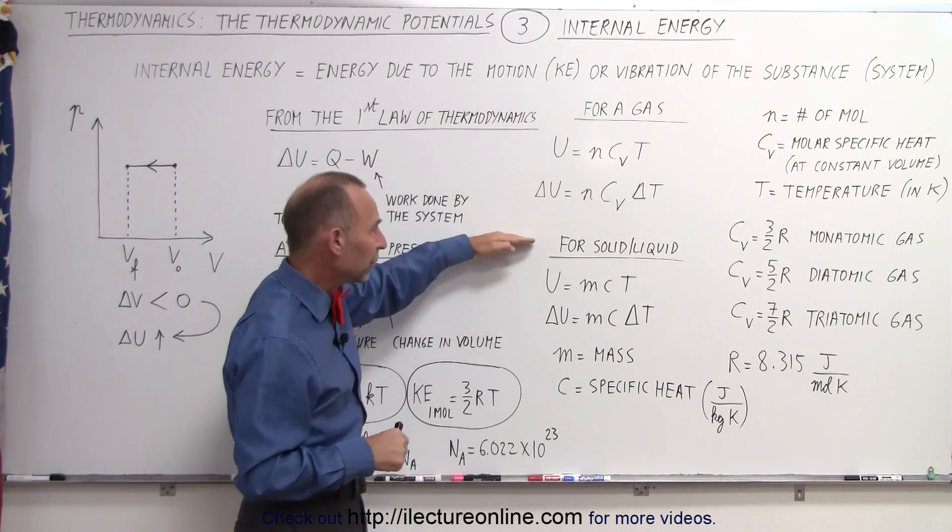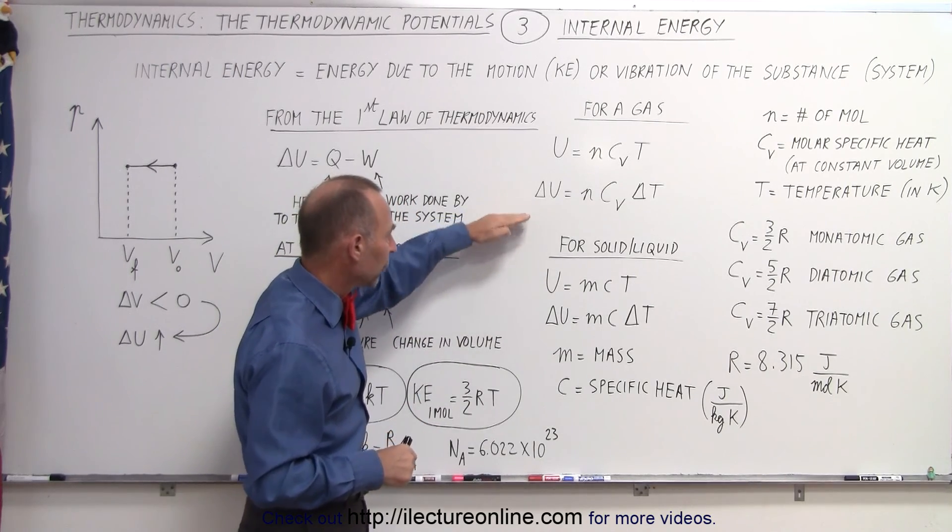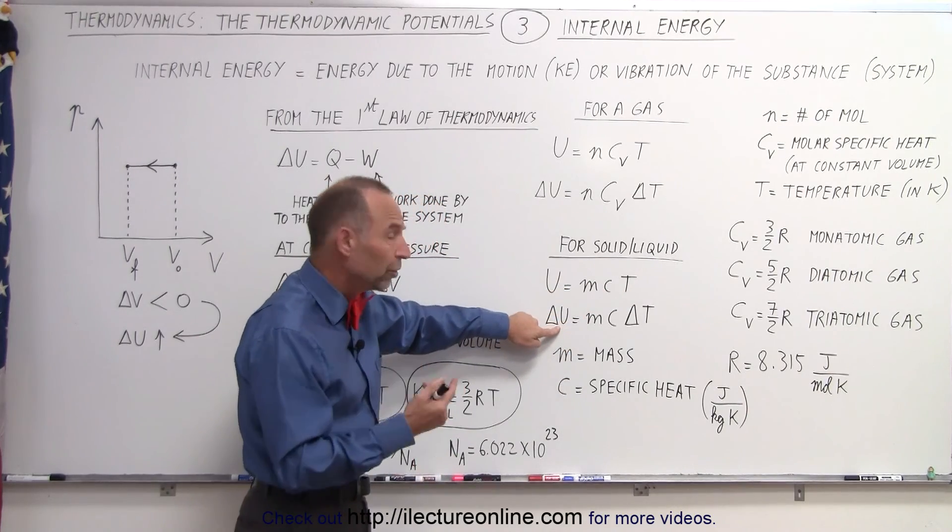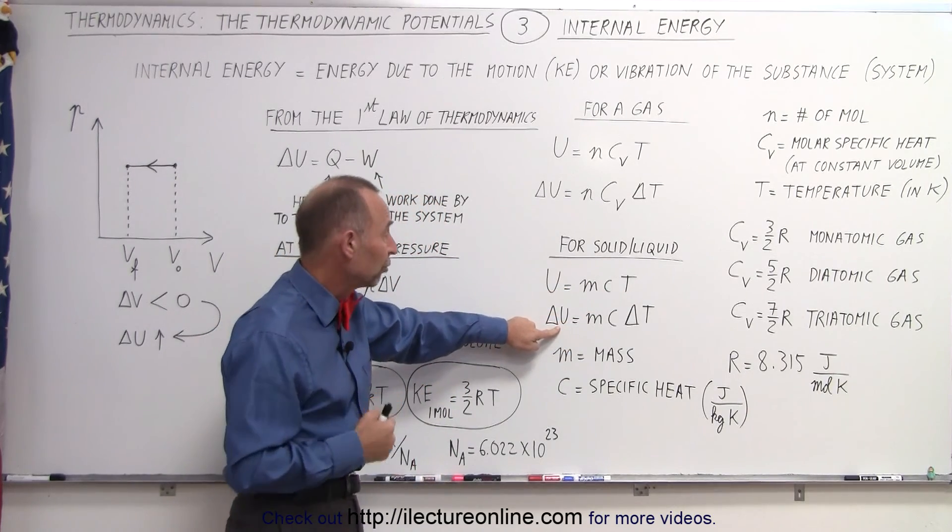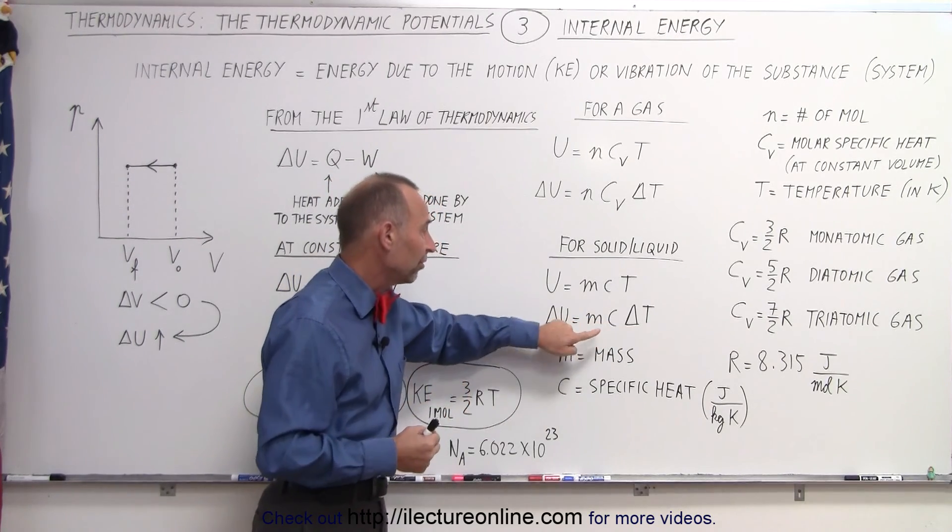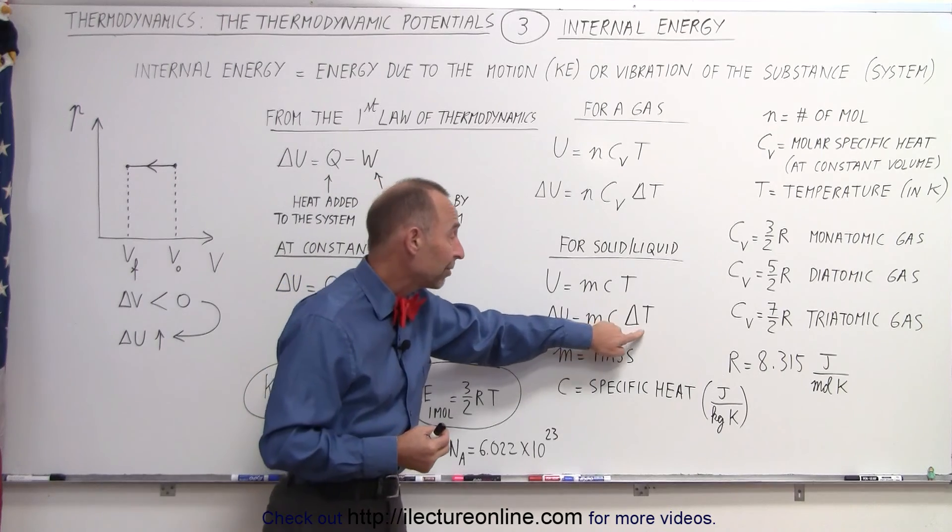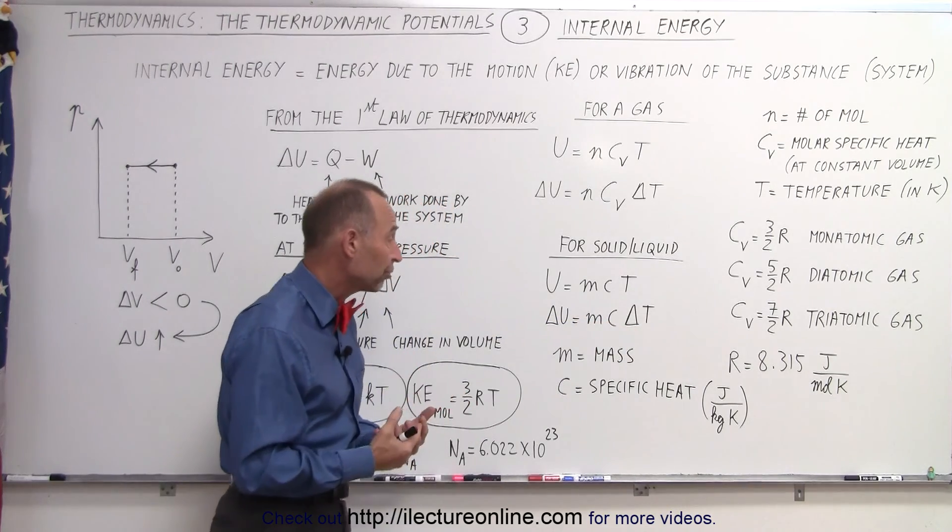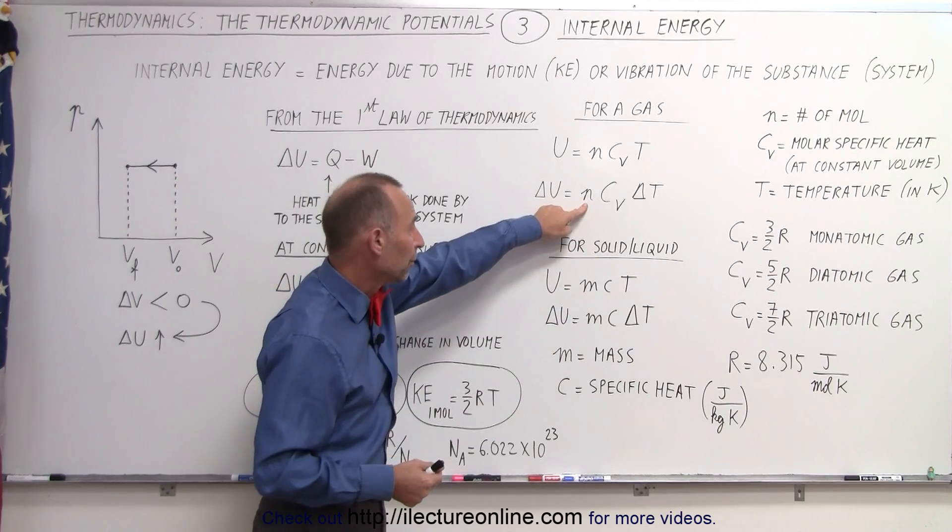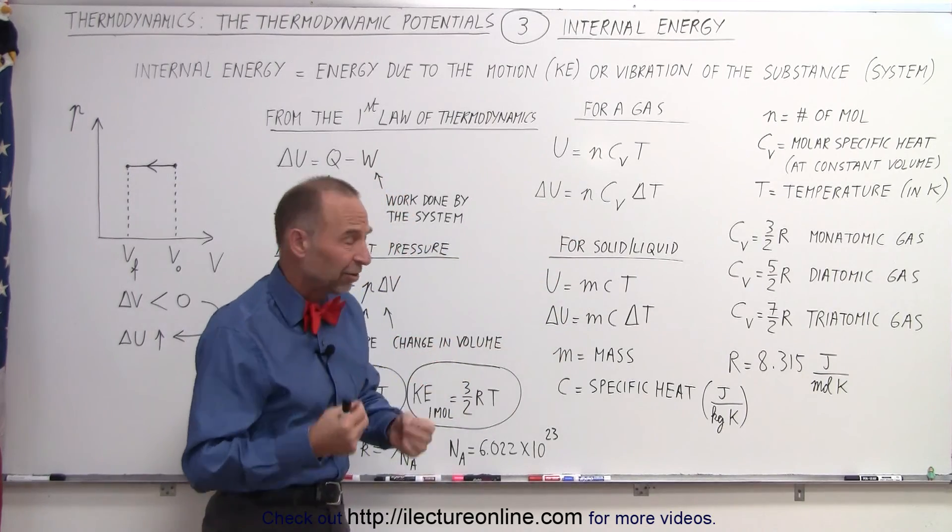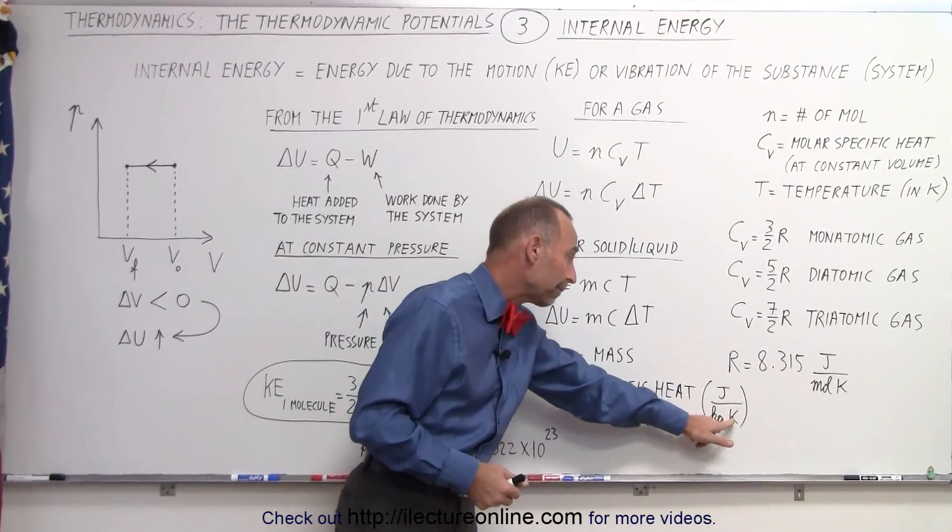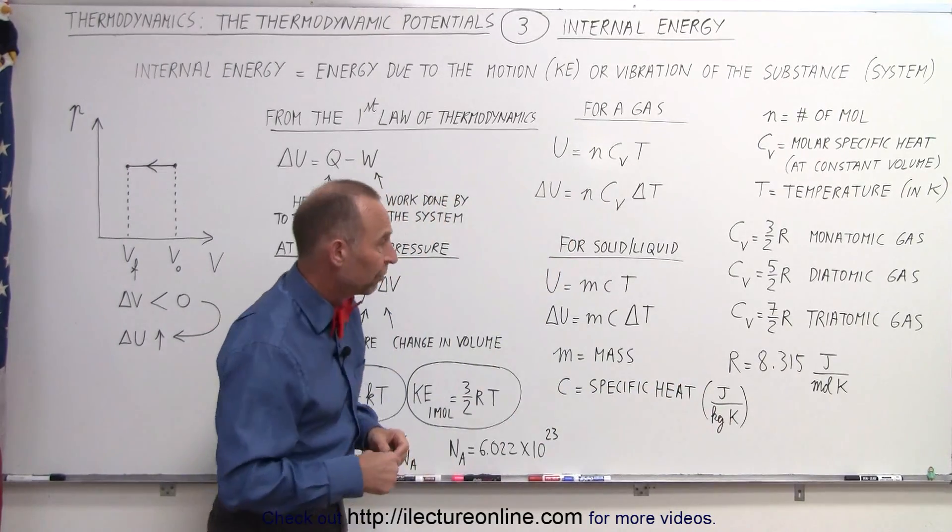For a solid or liquid, we use the equation, which is very similar, where U is equal to M C times T. So delta U, again, we're interested in the change in internal energy, is equal to M C times delta T. C is the specific heat for the substance. M is the mass in kilograms, and delta T is the change in temperature. So the only difference is that we have the mass here versus the number of moles. But the general idea is the same. The specific heat is defined as something in joules per kilogram per Kelvin for that particular substance.